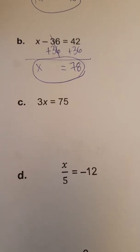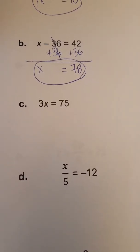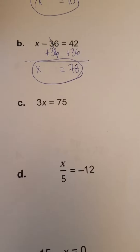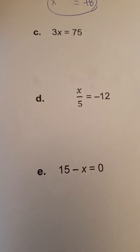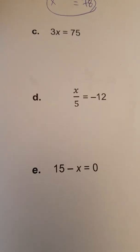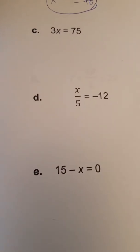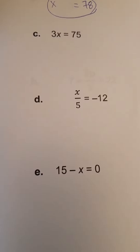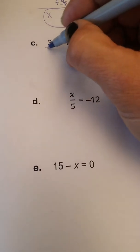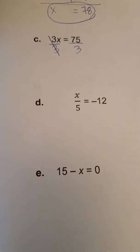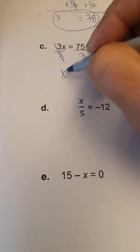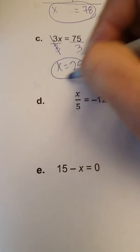Feel free to pause this, speed up the playback, or review anything that you'd like. The next example, 3x equals 75, we have a coefficient on our variable. So when a number is attached to a letter that represents multiplication, and we undo multiplication with division. So to solve this equation for x, we need to divide both sides by 3, which leaves us with x is equal to 25.